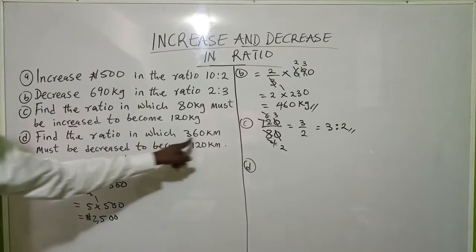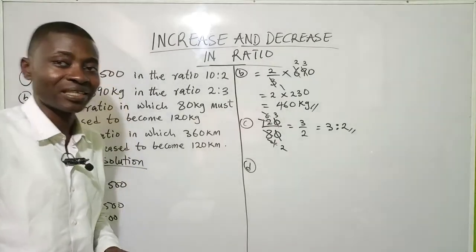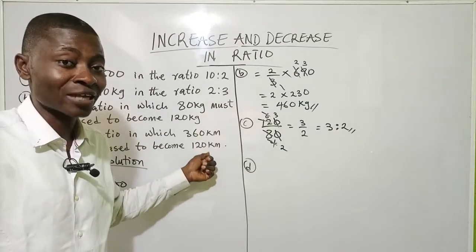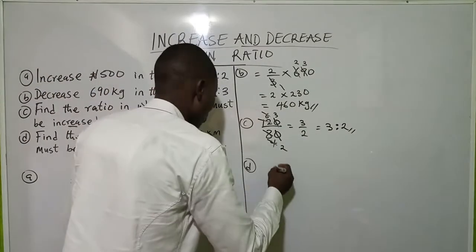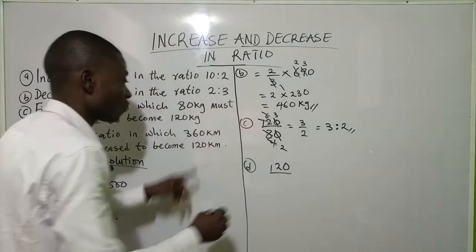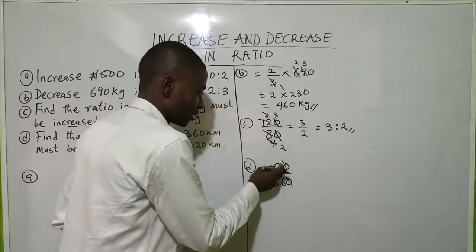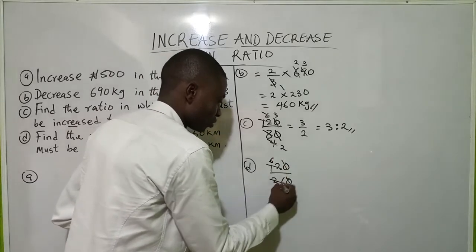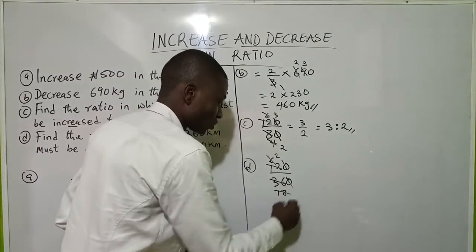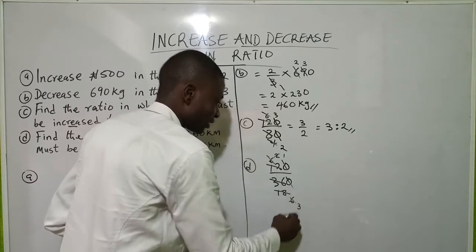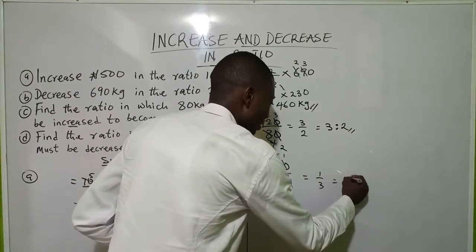The last one says: find the ratio in which 360 kg must be decreased to become 120 kg. Since we are decreasing, the smaller value — 120 kg — will be in the numerator, while the bigger one — 360 — will be in the denominator. So we have 120 over 360. We reduce again: canceling the zeros gives 12 over 36; dividing by 6 gives 2 over 6; dividing by 2 gives 1 over 3, which is the same as ratio 1:3.